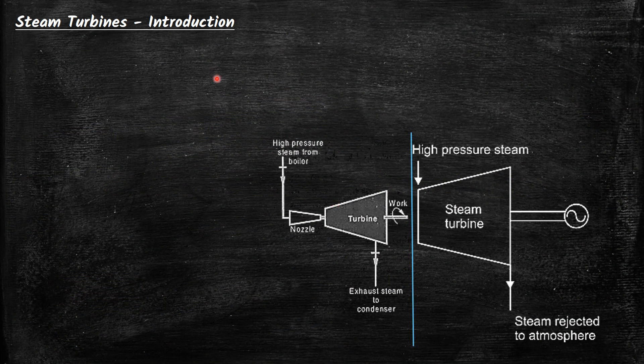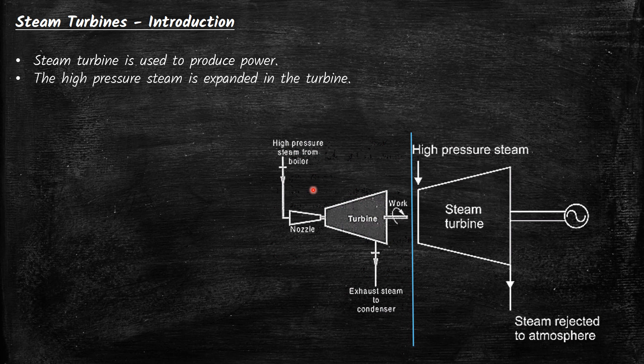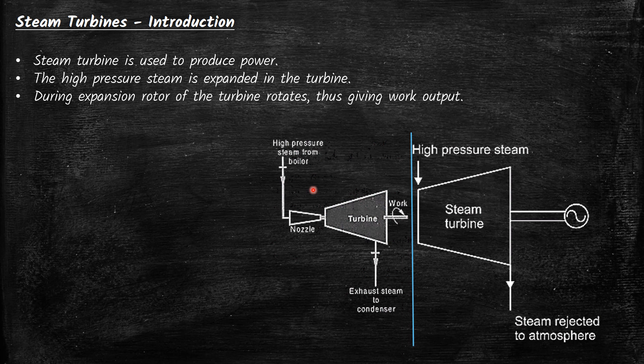Steam turbines are mechanical devices which use steam to produce power. The high pressure steam is expanded in the turbine. During expansion, the rotor of the turbine rotates, giving power work output. Work is developed at the expense of steam enthalpy.